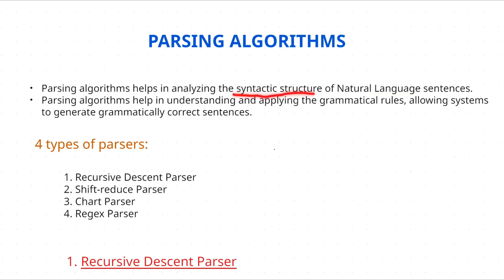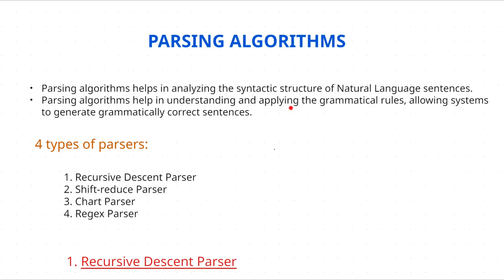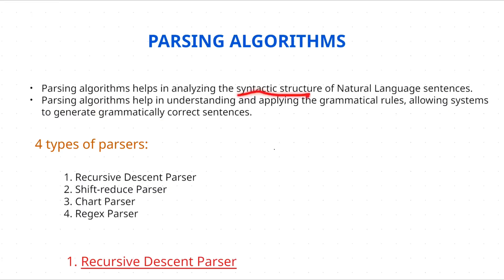This unit is about analyzing syntactic structure, and parsing algorithms are used to do exactly that. The second point is: parsing algorithms help in understanding and applying grammatical rules, allowing systems to generate grammatically correct sentences. We analyze syntactic structure by applying grammatical rules to check whether a sentence is grammatically correct or not.